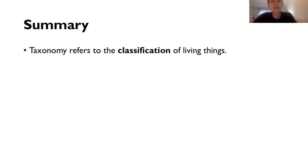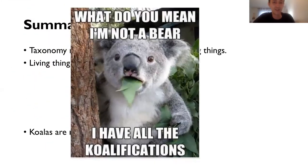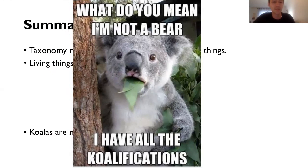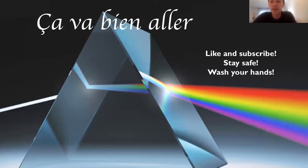To sum up: taxonomy is the classification of living things. They are sorted into kingdom, phylum, class, order, family, genus, species. And we also learned that koalas are not bears. As I promised in all my videos, here's today's bad joke: 'What do you mean I'm not a bear? I have all the koalifications.' Make sure you tune in to the next video — we're going to try to do a lab from my house. Thanks for watching, take care, stay safe, let's stay positive, and go wash your hands.